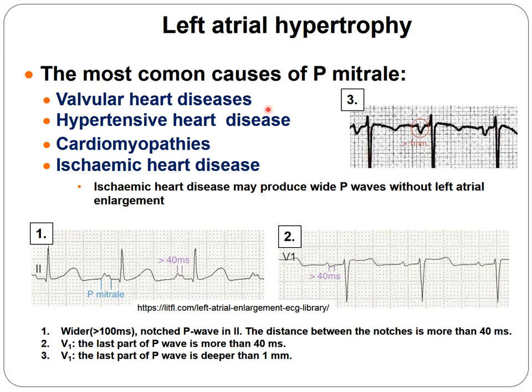The most common causes of left atrial hypertrophy include valvular heart diseases, hypertensive heart diseases, cardiomyopathies, and ischemic heart diseases. It is very important to note that ischemic heart disease may produce a wide P wave without actual left atrial enlargement.